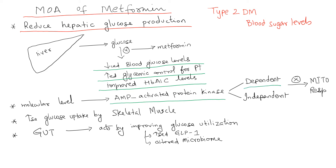Metformin acts on AMP-activated protein kinases either in a dependent manner or an independent manner, thereby affecting mitochondrial respiration. This happens in the liver, and that is how we think it helps decrease hepatic glucose production. At the skeletal muscle level, it also increases glucose uptake.